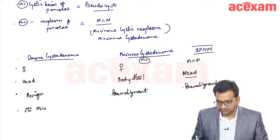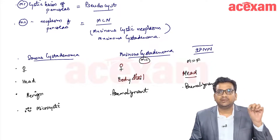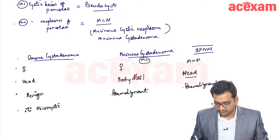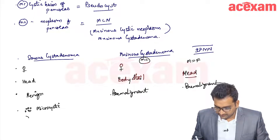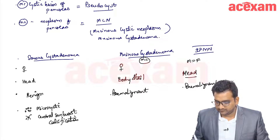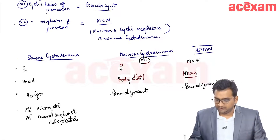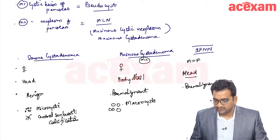Serous cyst adenoma is characterized by small microcystic lesions — small cysts inside a large lesion — and there is a central sunburst calcification. In mucinous cyst adenoma there are large macrocysts and there is a peripheral eggshell calcification.